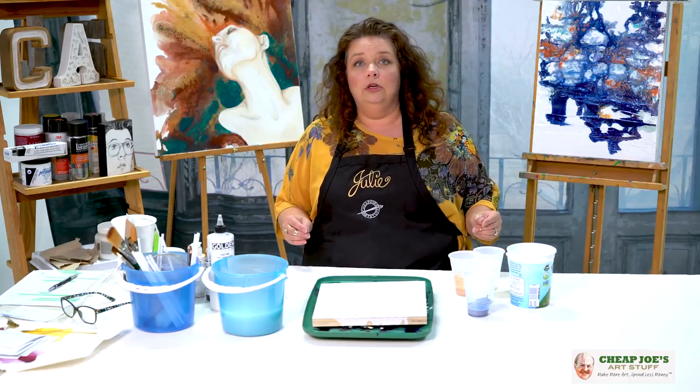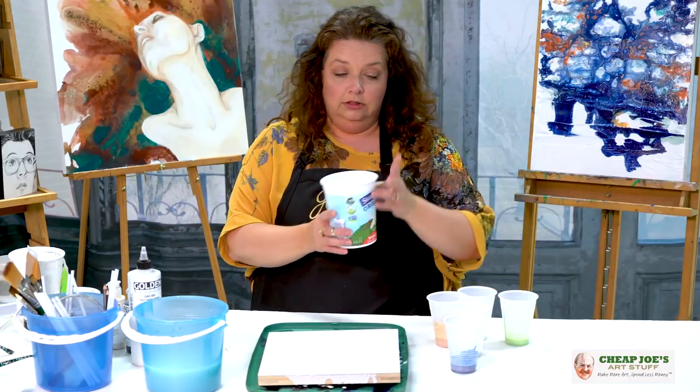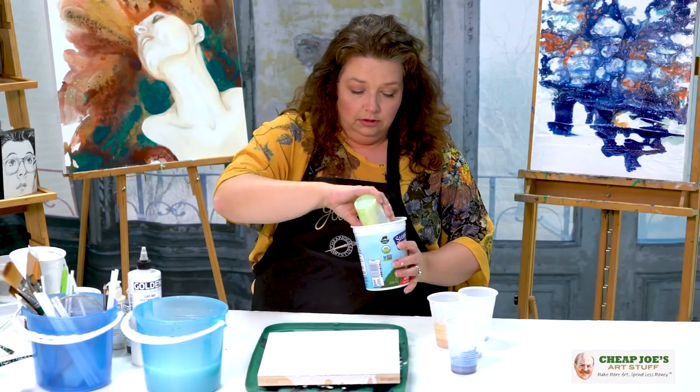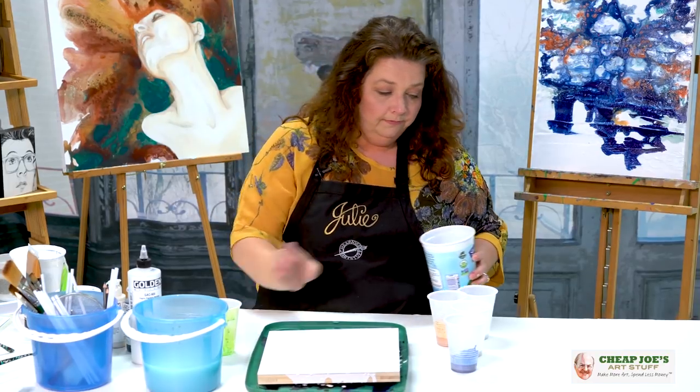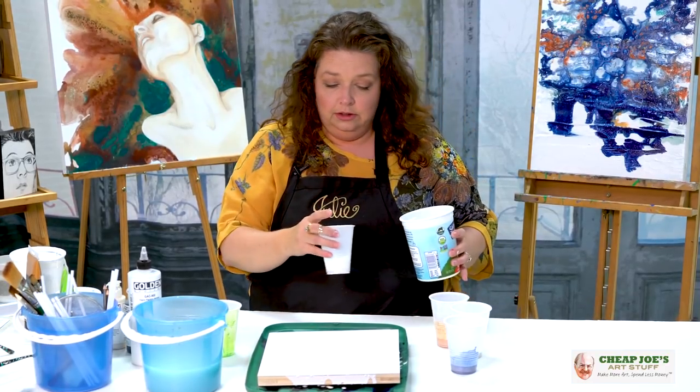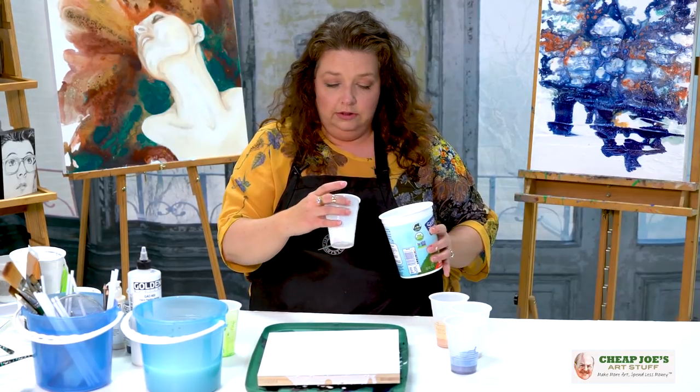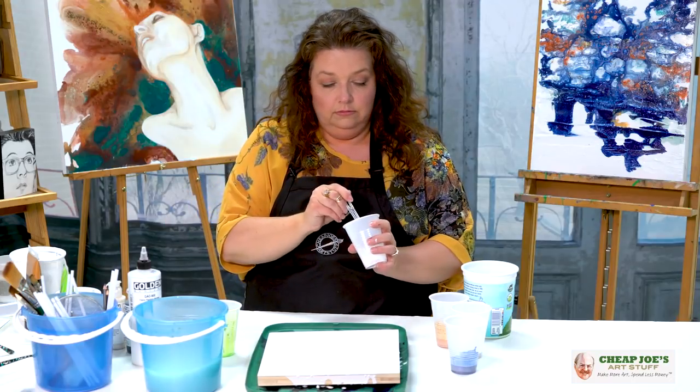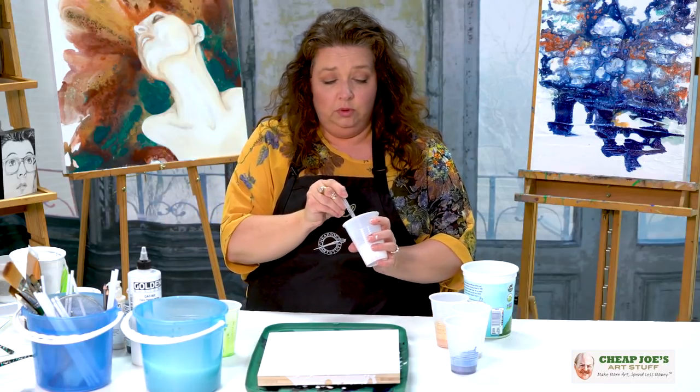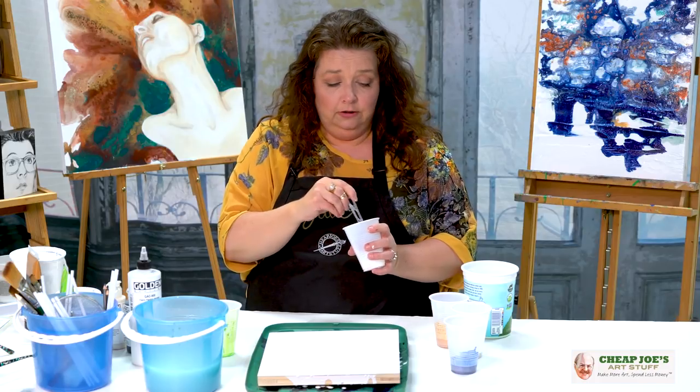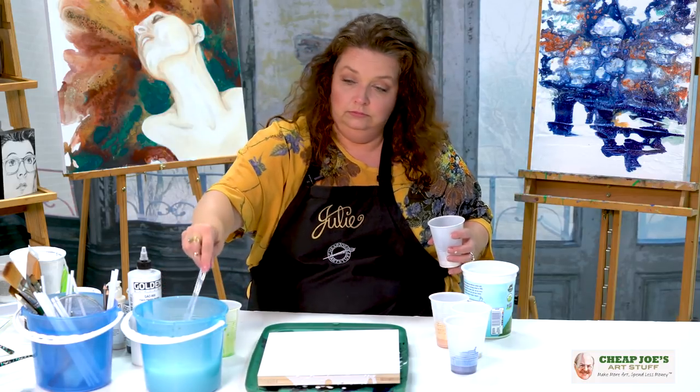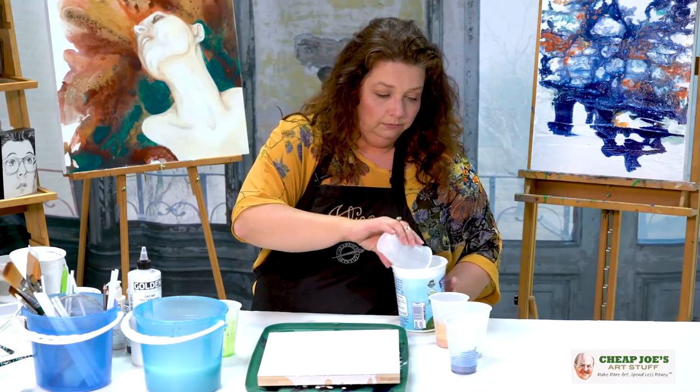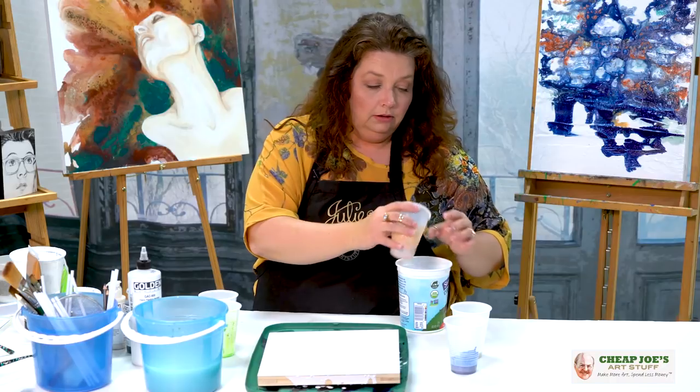Now what we're going to do is what's called a dirty pour. So here is my big cup here. I'm going to pour a little bit of spring green in here. Got a little bit of interference blue. This one's got a lump in it. Hold on. Pause for mixing here. All right. A little bit of interference blue.